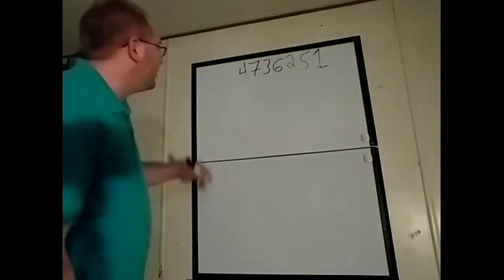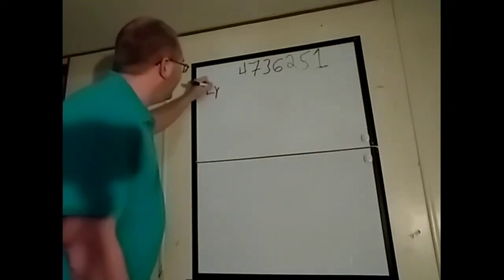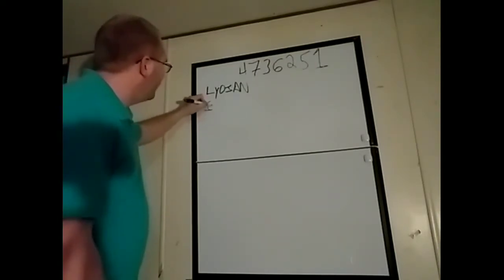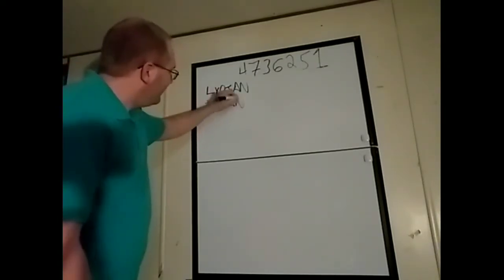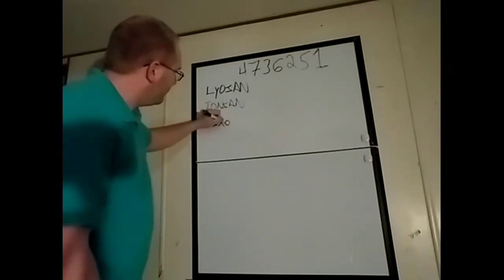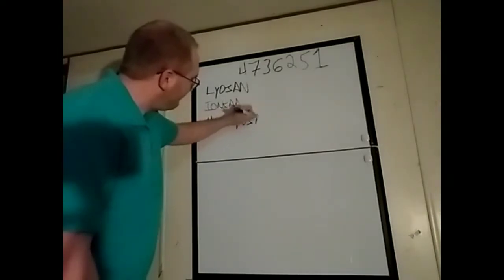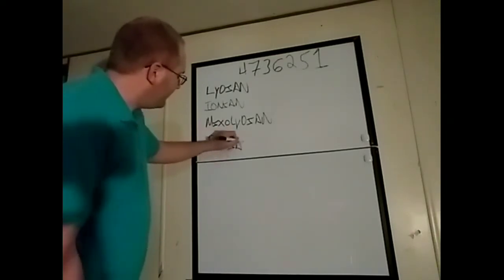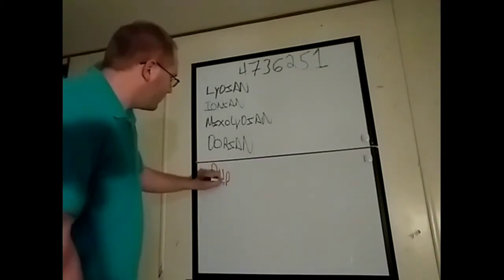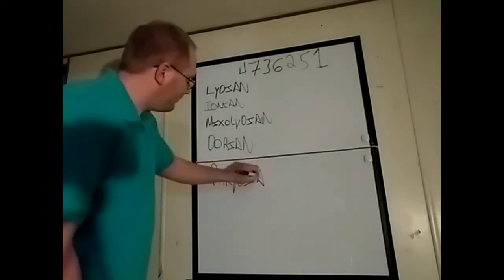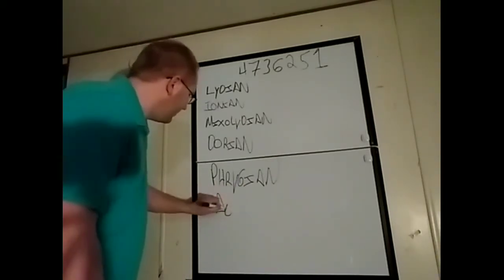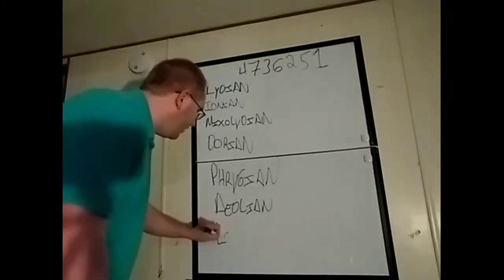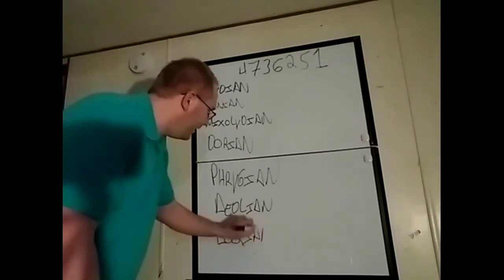Tonight, we're going to learn these seven modes, or moods. We start off first with Lydian, L-Y-D-I-A-N, then we have Ionian, then we have Mixolydian, then next we have Dorian, Phrygian, Aeolian, and lastly, Locrian, L-O-C-R-I-A-N.